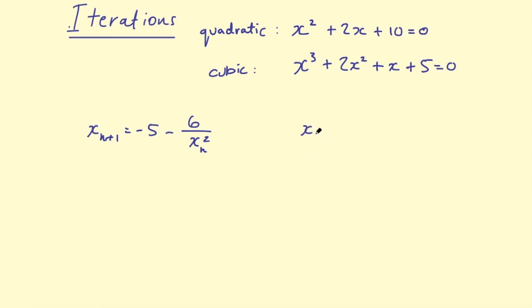Then they might say that x_0 equals -1.5, and ask you to find x_1, x_2, and x_3. This is a typical example of an exam-style question.